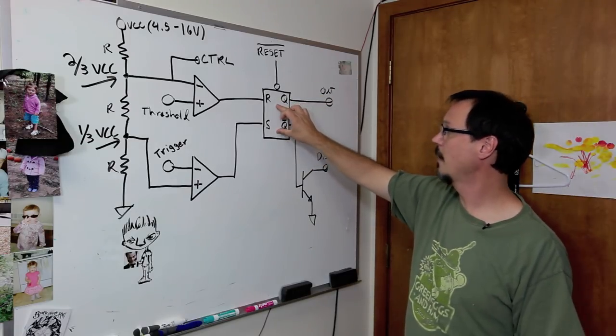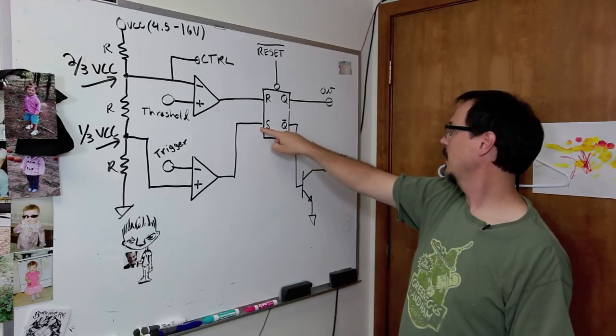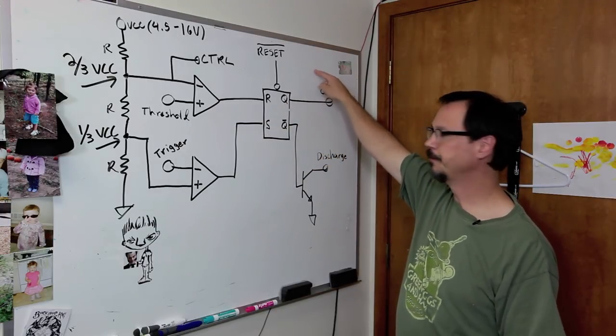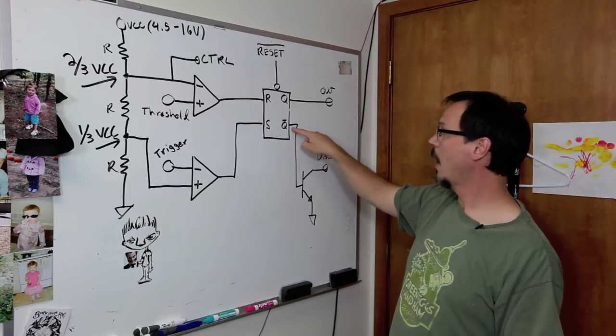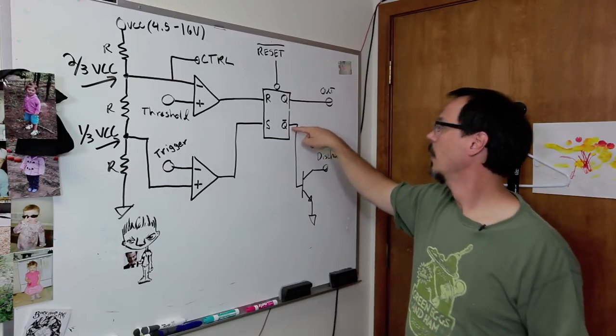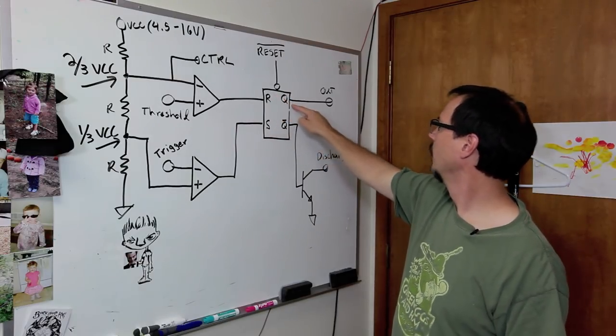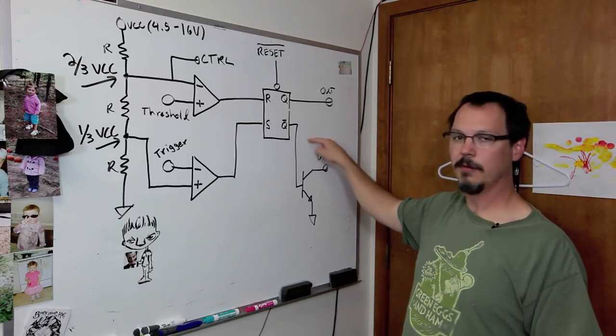But the flip-flop itself, when set is high, Q will also go high. And Q0 will go low. Crazy! When reset is high, Q will go low, and Q0 will go high.